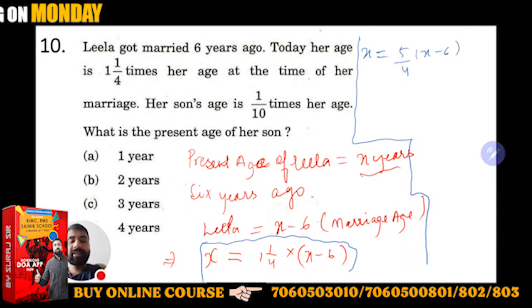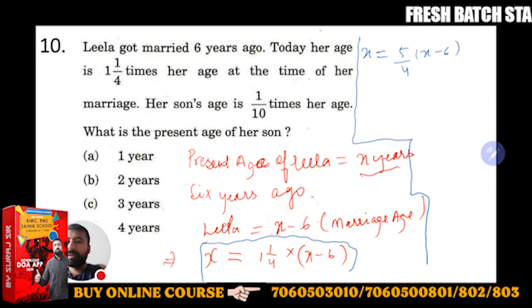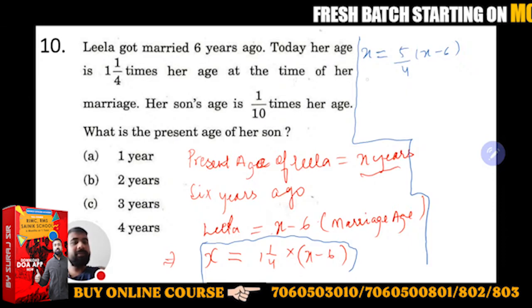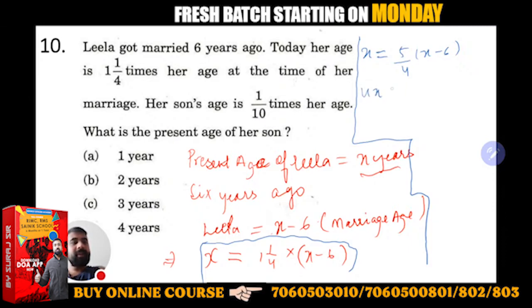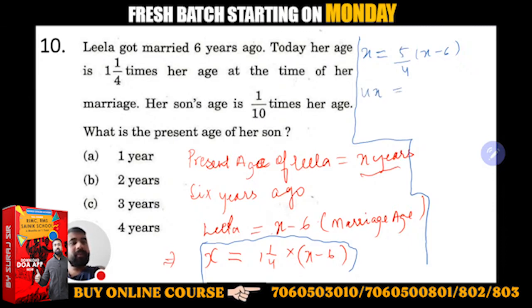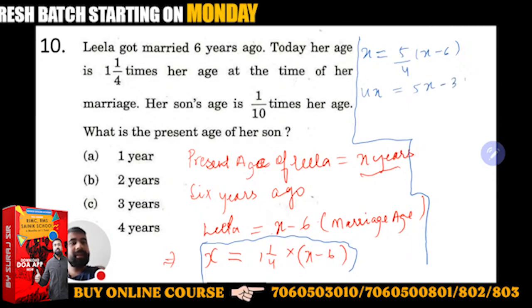From here you can easily calculate x. If you solve this, it is going to be 4x is equal to 5x minus 30.